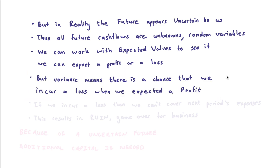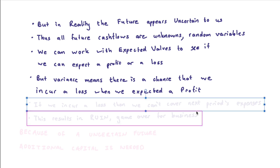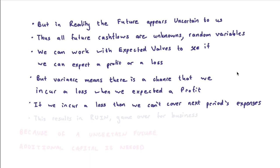There's a chance that we're going to incur a loss when we expected a profit. A good example of this is with the coronavirus — not a lot of businesses were expecting a shutdown of this duration, which has disrupted business, seen income decrease, and in some cases expenses increase. The big thing here is that if we incur a loss and haven't set aside any additional capital, then we can't cover the next period's expenses. If you can't meet your expenses going forward, it's game over for a business — and we refer to this as ruin.